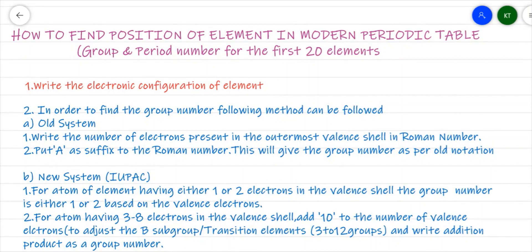Namaste, welcome to the video lecture series on the chapter Periodic Table of Elements. In this video, that is video number 9, we are going to see how to find the position of an element in the modern periodic table — how to locate the group number and the period number for a particular element. We are going to discuss this for the first 20 elements, that is from hydrogen till potassium, as per our scope of syllabus.